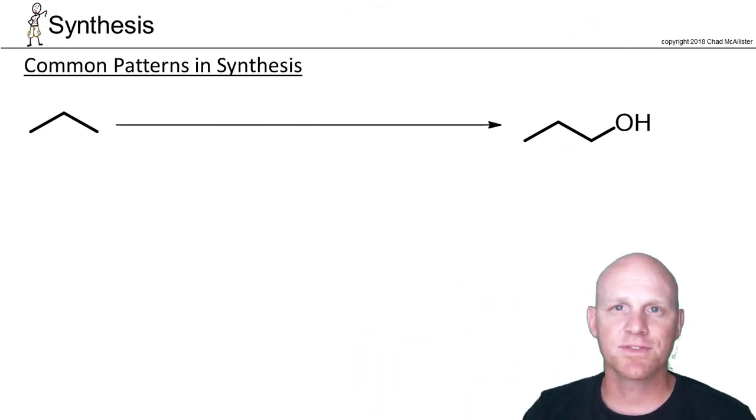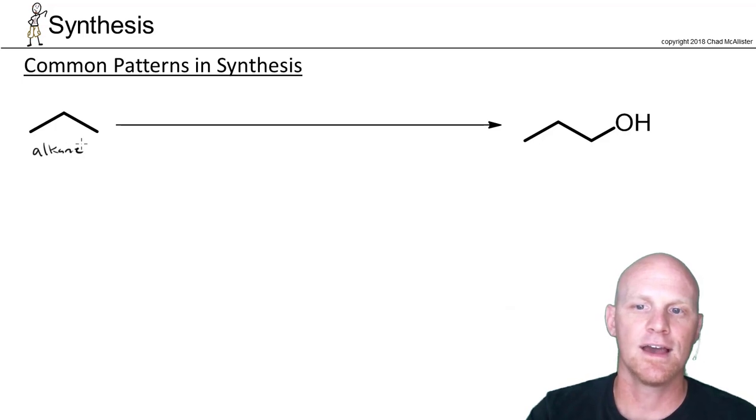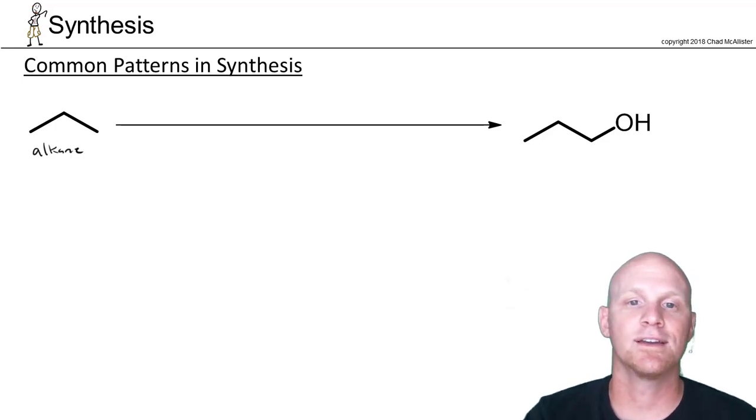When you're doing a synthesis problem, your professor's probably going to really harp on you to work it backwards. First of all, it is very helpful to work them backwards, but you don't always have to work it backwards completely. In this first step, I'll show you, we know what's going to happen. We have an alkane here, and the only thing you know how to do with an alkane is add a good leaving group. So in this case, we're going to do bromination.